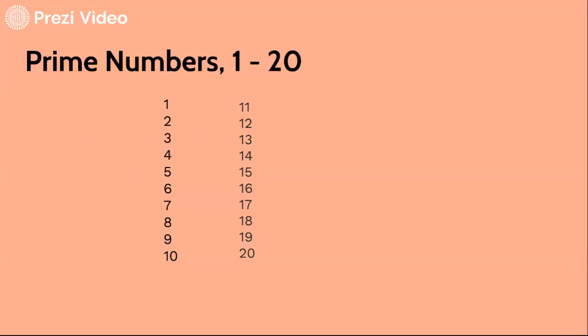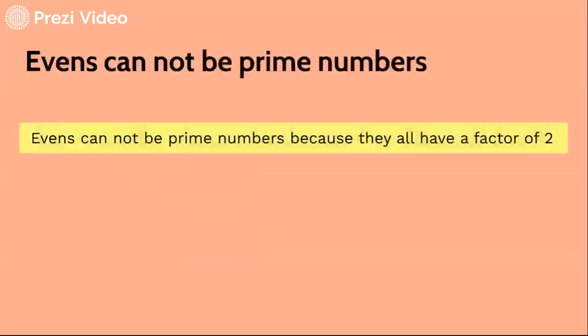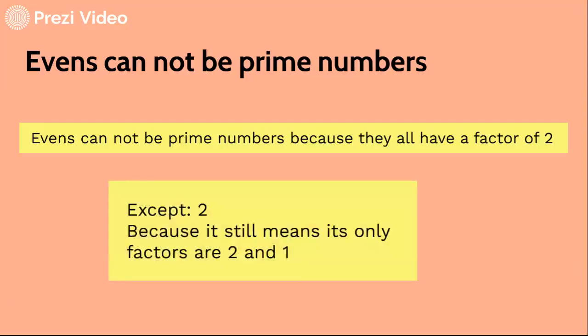So let's try to find the first prime numbers up to 1 to 20. Evens cannot be prime numbers because they all have a factor of 2, except, very importantly, 2 because it still means I only have factors of 2 and 1.